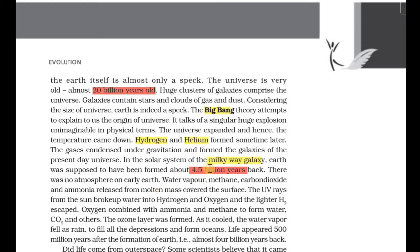4.5 billion years back, in the first stage, there was a glowing fire stage. This is considered the third stage. There was a little gas. First, there were some elements: carbon, nitrogen, oxygen, and hydrogen. There was no atmosphere in the first place. In the last stage, there was a little water.